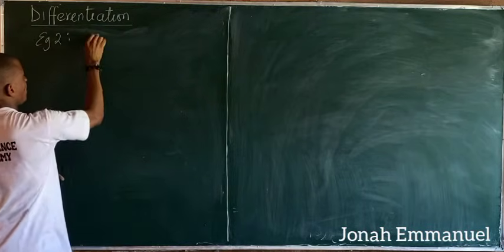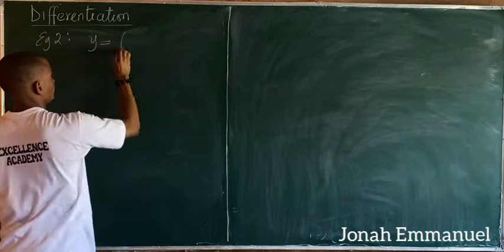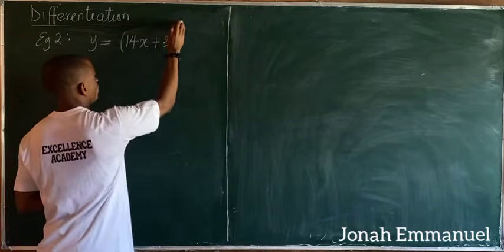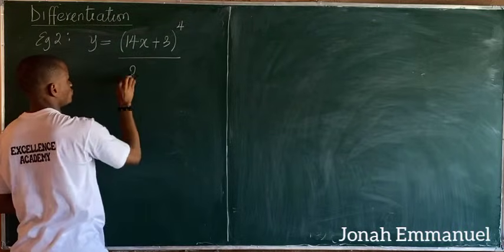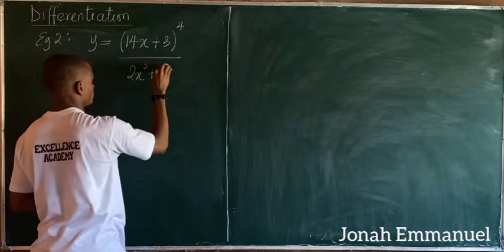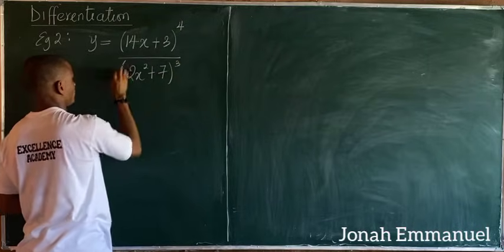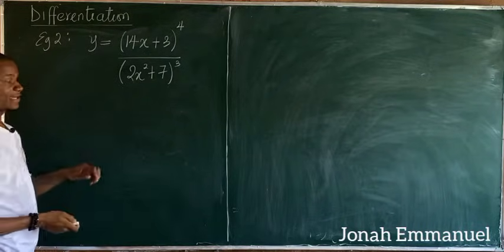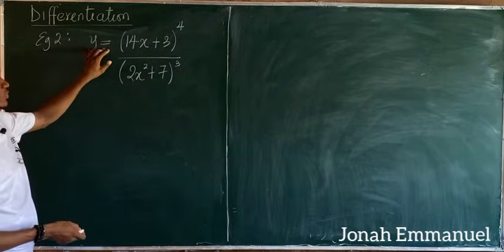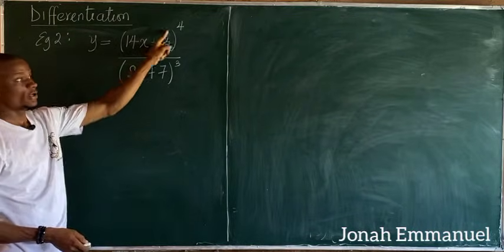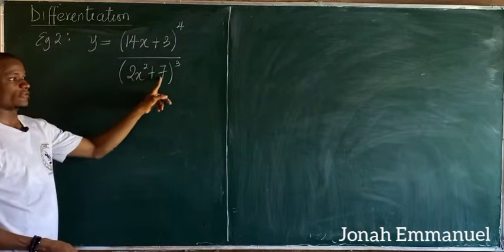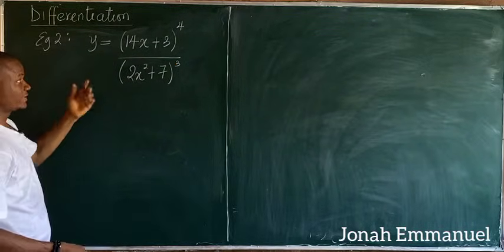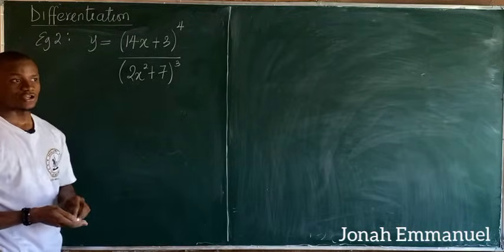We're given y equal to (14x + 3) all to the power 4, all over (2x squared + 7) all to the power 3. Looking at this, I can see that y equals (4x + 3)^4 divided by (2x² + 7)^3 — one expression dividing another — so this becomes a quotient rule differentiation problem.